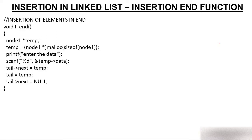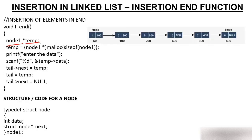Looking at the code — we have created a pointer called temp of type node1. We already created a structure called node with two parts: a data part and an address part. The address part is of type struct node because it's a self-referential structure. We typedef'd this structure so instead of writing struct node, we can just write node1. So we have created a pointer temp of type node1.